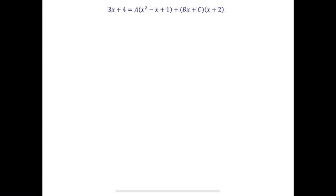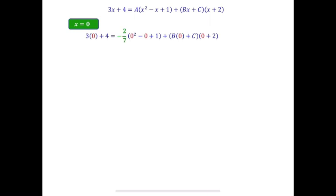Since the other factor is a quadratic that cannot be factorized, we cannot get a value directly from it. Instead, we use x equals to zero. When we substitute x equals to zero into the equation together with the value of A, we get the value of C. We still have to find the value of B.